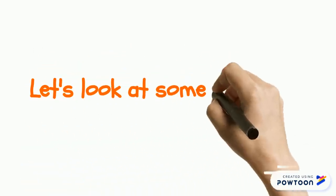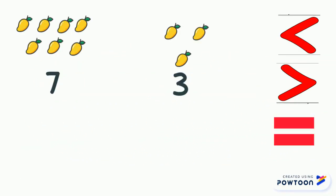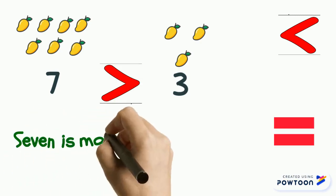Let's look at some examples. Let's compare these two numbers. In this example, count the mangoes and see that seven is bigger than three. So you will have to use the more than sign. So it will be read as seven is more than three.